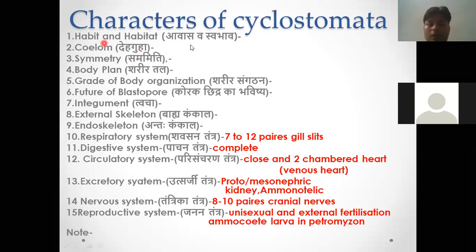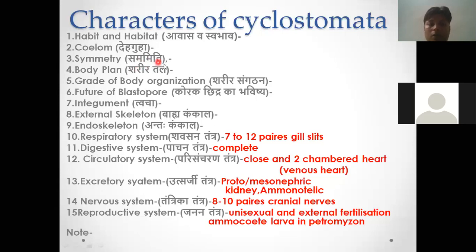They are parasitic — both endoparasite and ectoparasite. They are enterocoelous animals, meaning the coelom is formed by outpocketing. Let's talk about symmetry. The symmetry is bilateral symmetry, which means we can divide the body into two equal halves along one plane. This is called a bilateral symmetrical animal.